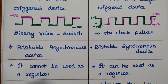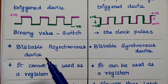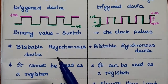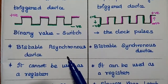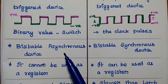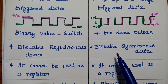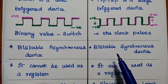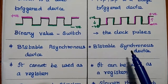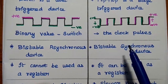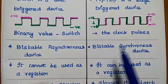Latch is an asynchronous device because it does not depend on clock pulses. But flip-flop is a synchronous device, as it is based on the clock pulses.